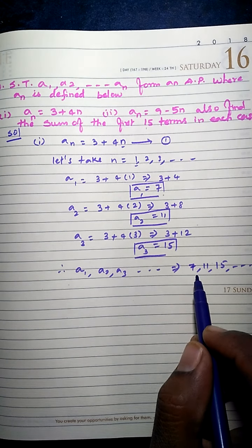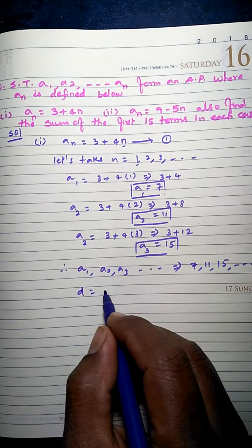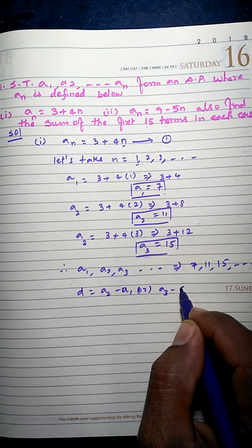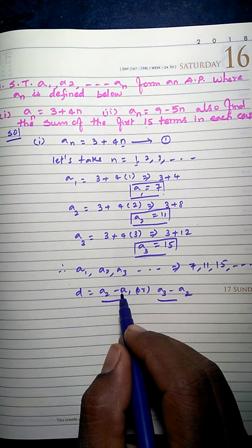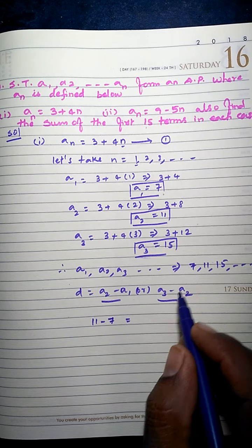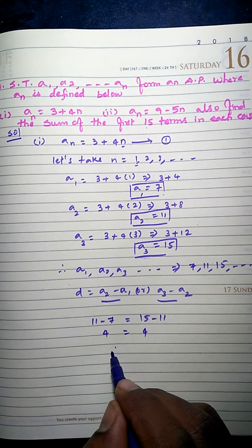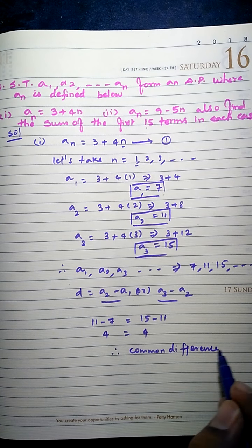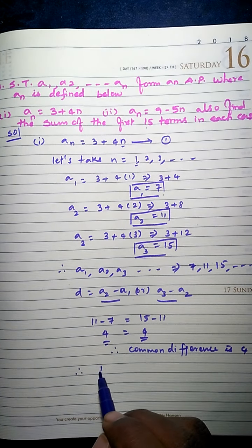We know how to check whether a given sequence is an AP by using the common difference formula. Let's find a2 − a1 and a3 − a2. a2 − a1 = 11 − 7 = 4, and a3 − a2 = 15 − 11 = 4. Since both common differences are equal to 4, we can say it forms an AP.